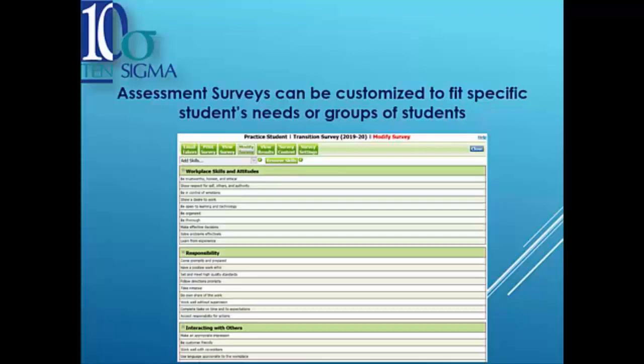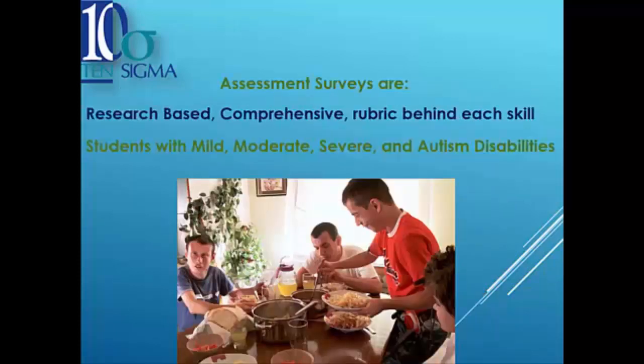So who are you using these materials with? All of our students at our school have a primary diagnosis of autism, and all of our transition-age students who I'm using the surveys with also have intellectual disability ranging from mild to severe. Some students may have other secondary diagnoses like OHI — for example, if they have seizures — or they may have ADHD as well.